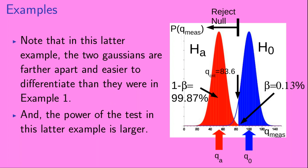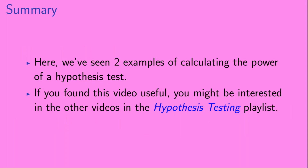In this latter example, the two Gaussians are farther apart and easier to differentiate than in example 1, which is related to the fact that the power of the test is larger here than in example 1. In summary, we've seen two examples of calculating the power of a hypothesis test. If you found this video useful, you might be interested in the other videos in the hypothesis testing playlist.